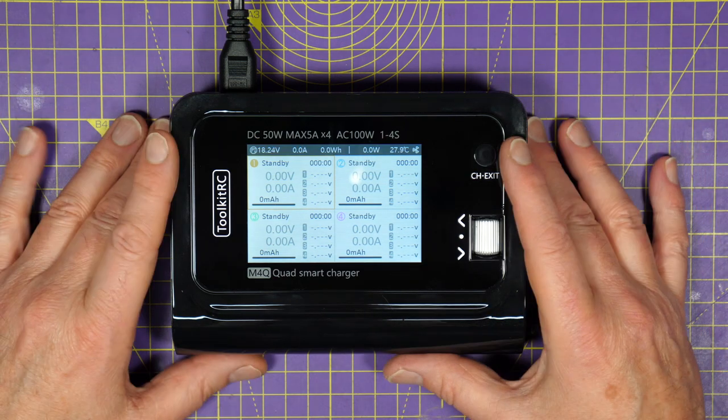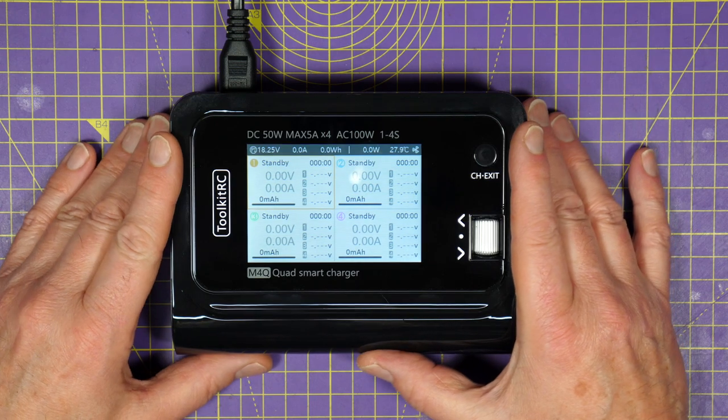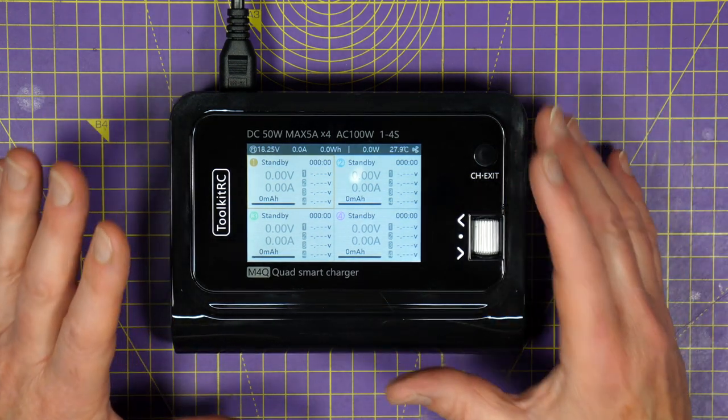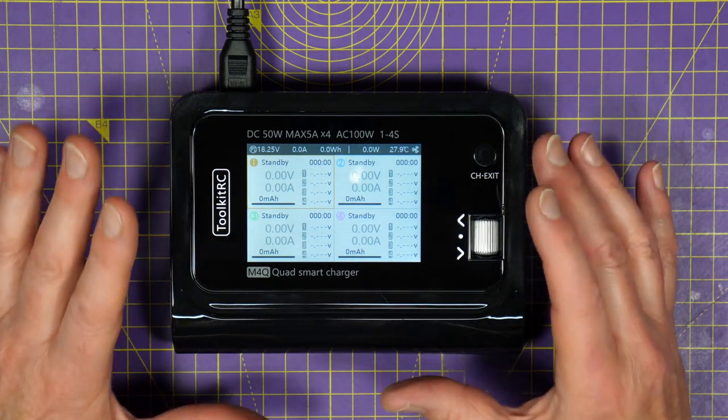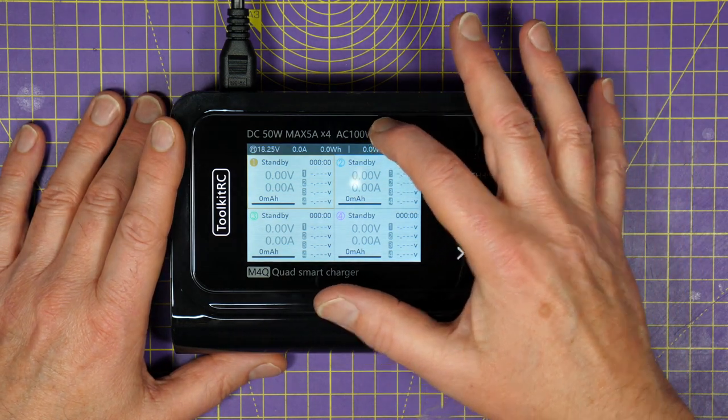This new M4Q battery charger from Toolkit RC has got a couple of neat tricks up its sleeve. Just like the M4AC charger that I reviewed recently, it's got its own internal power supply. In this case it's 100 watts.